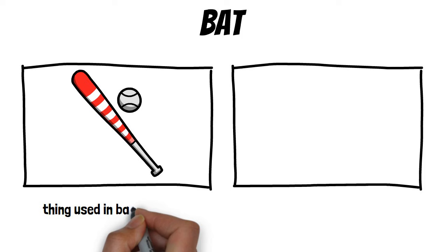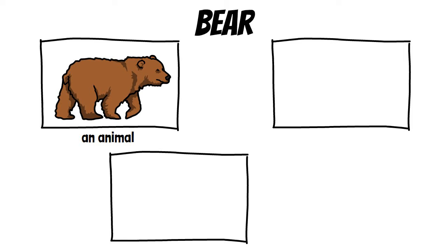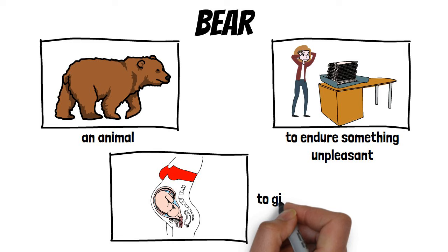Bat: the first meaning is a thing used in baseball to hit a ball with, and the second is an animal. Bear: the first meaning is an animal, the second means to endure something unpleasant, and the third means to give birth.